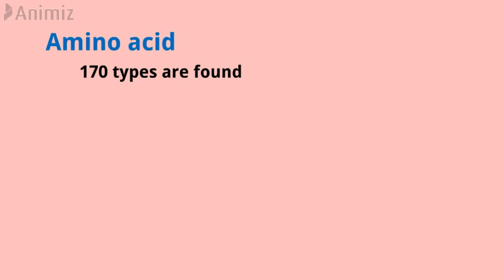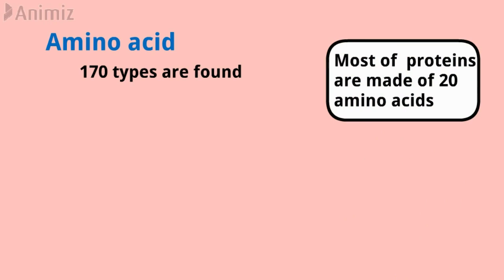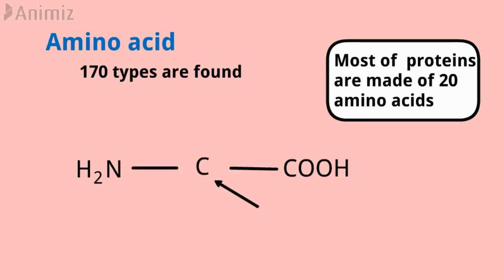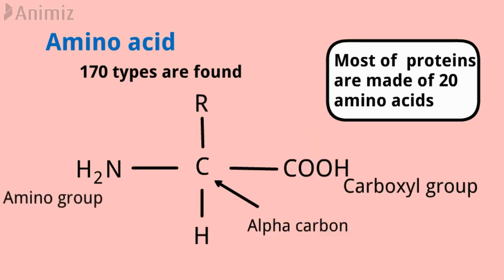Of these, about 25 are constituents of proteins, and most proteins are made up of 20 types of amino acids. All amino acids have an amino group and a carboxyl group attached to the same carbon, also known as the alpha carbon. They have the general formula as shown, where R may be a hydrogen atom as in glycine, or CH3 as in alanine, or any other group.